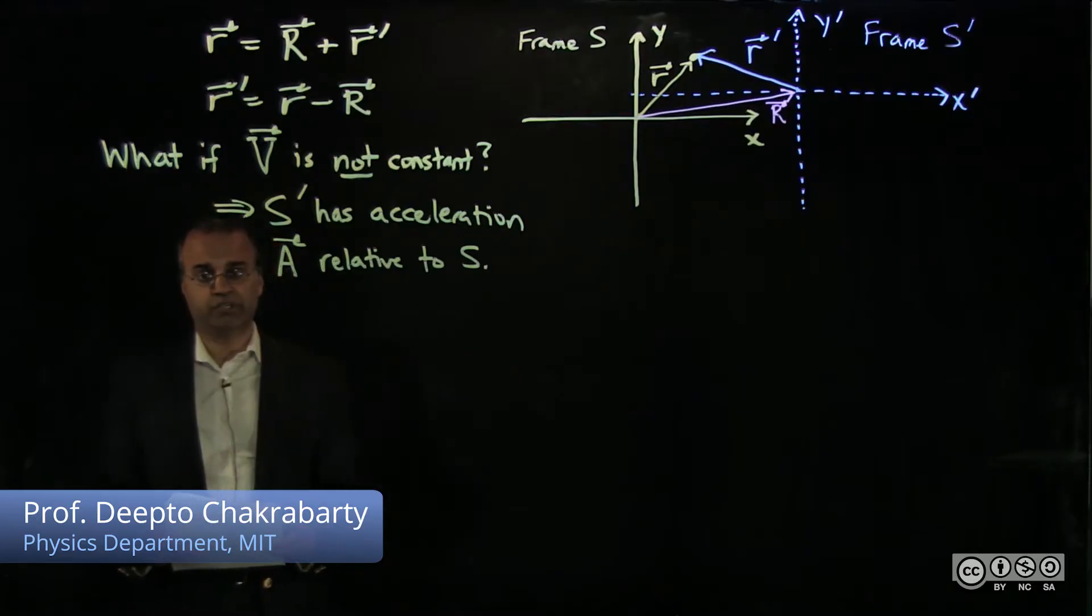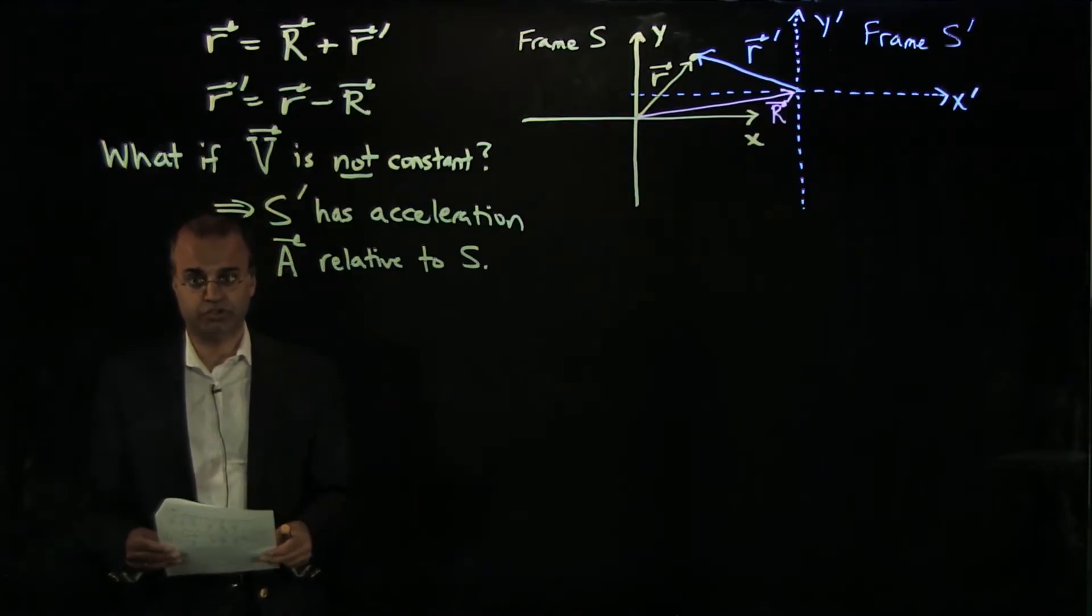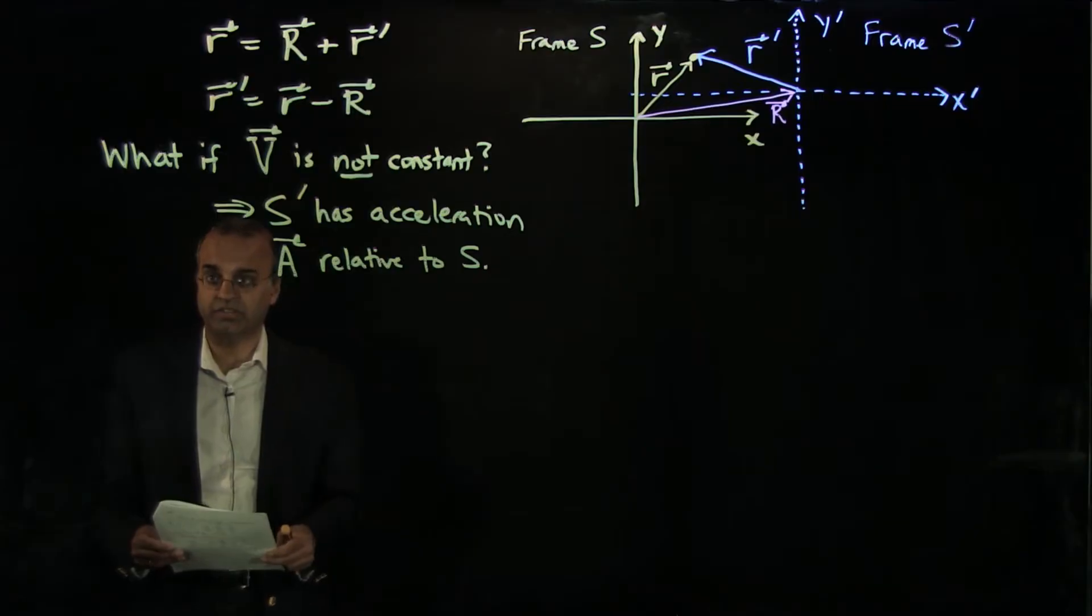Now that we've seen how coordinates are related between two inertial frames, I want to consider a slightly more advanced example for a moment, which is suppose that capital V, the vector velocity of frame S prime relative to inertial frame S, is not a constant.